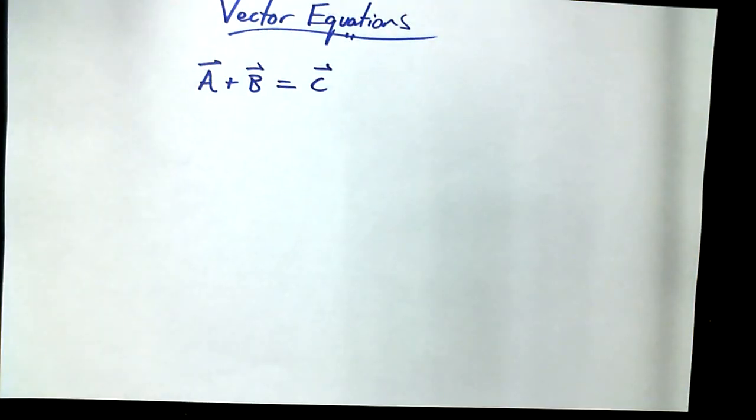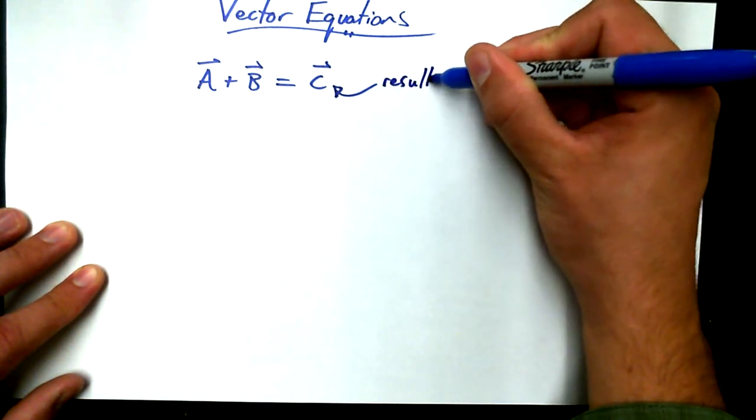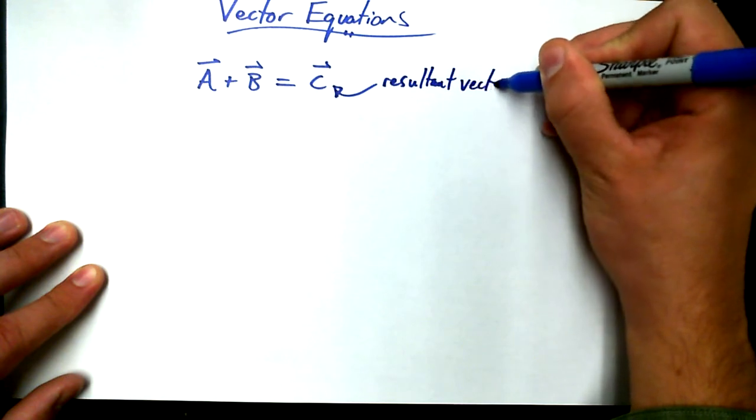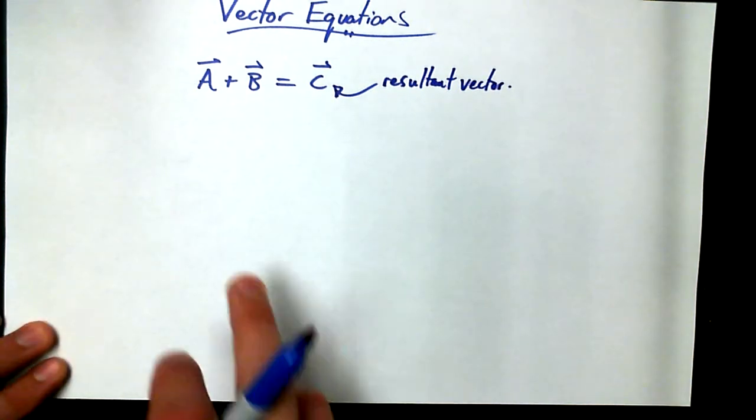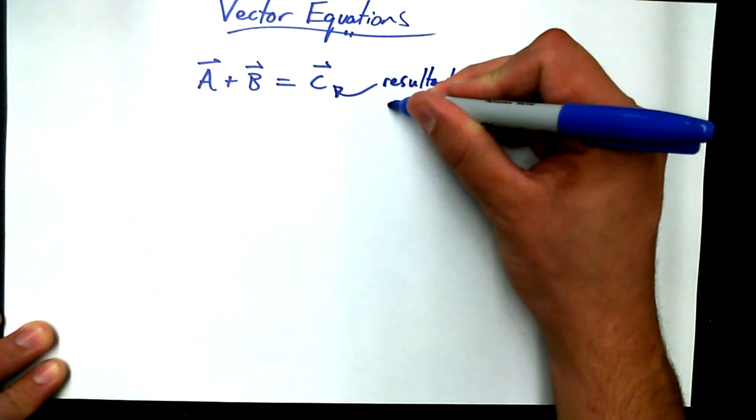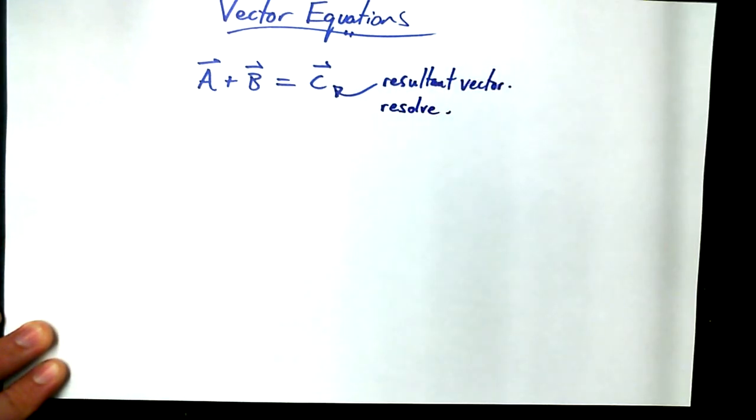Vector A plus vector B equals vector C. And just by way of vocabulary, I'd like to identify which of these vectors I would call the resultant vector. Can you guess which one it is? Yeah, C. It's the result. The word is built right into it. This guy here is what we call the resultant vector.